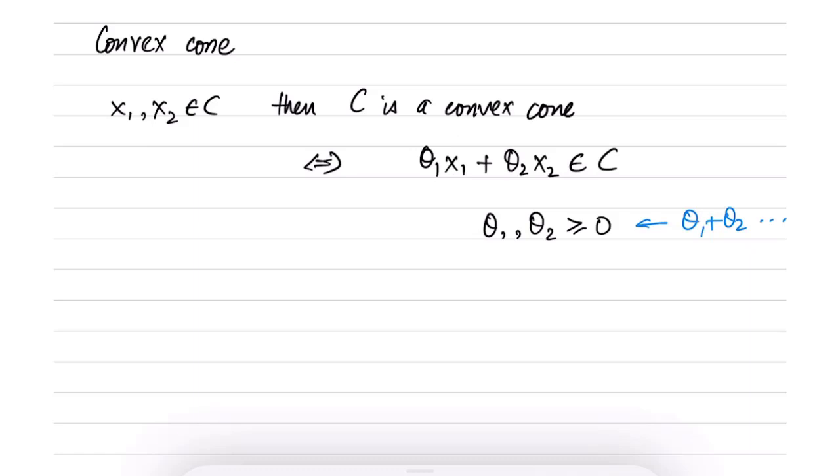Perhaps this point can be illustrated pictorially. So let us consider this set. In this set, you can see that a point of the form x1, let us say this is point x1 and this is point x2.